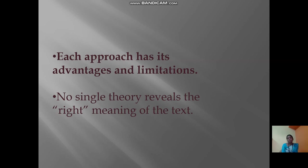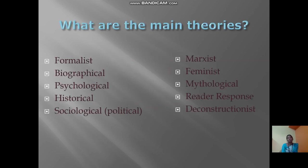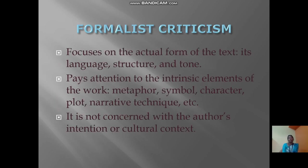No single theory reveals the single right meaning of the text. In literature we have many theories, including formalist, biographical, psychological, historical, sociological, Marxist, feminist, mythological, reader response, and deconstructionist theories.